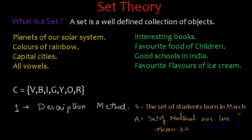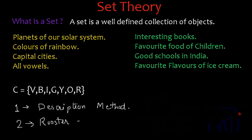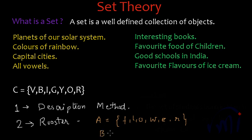There is one more method called the roster method — the second method of representing a set. In this method we manually list all the members or elements of the set. Suppose I want to write set A which lists all the alphabets of the word 'flower' — those alphabets will be F, L, O, W, E, and R. And if I want to write a set of all alphabets of the word 'floor': F, L, O, R — I will not write double O, because any element can appear only once in a set. This is the roster method.